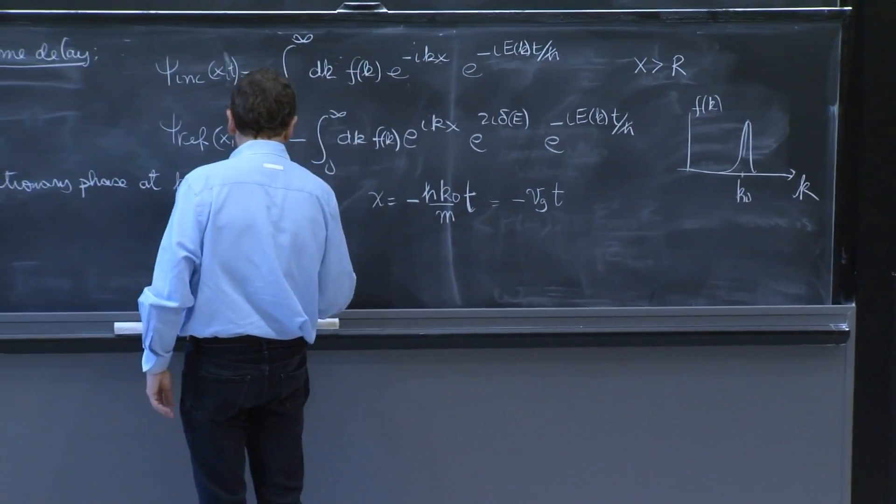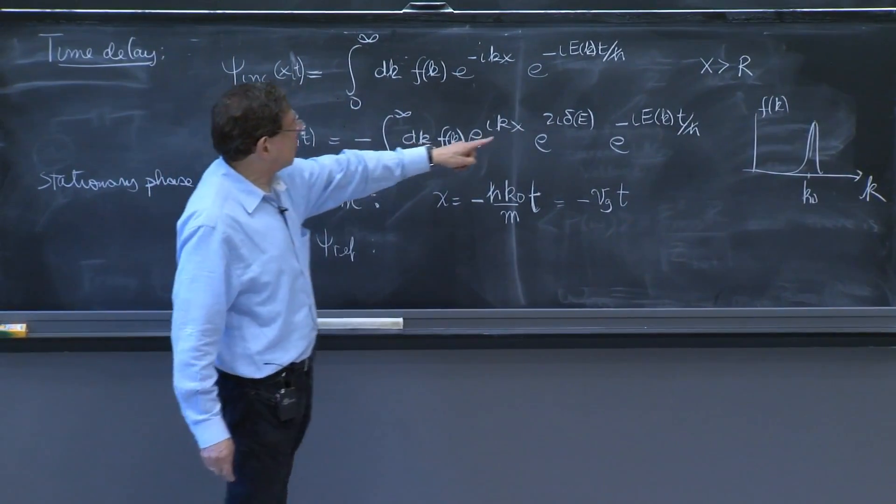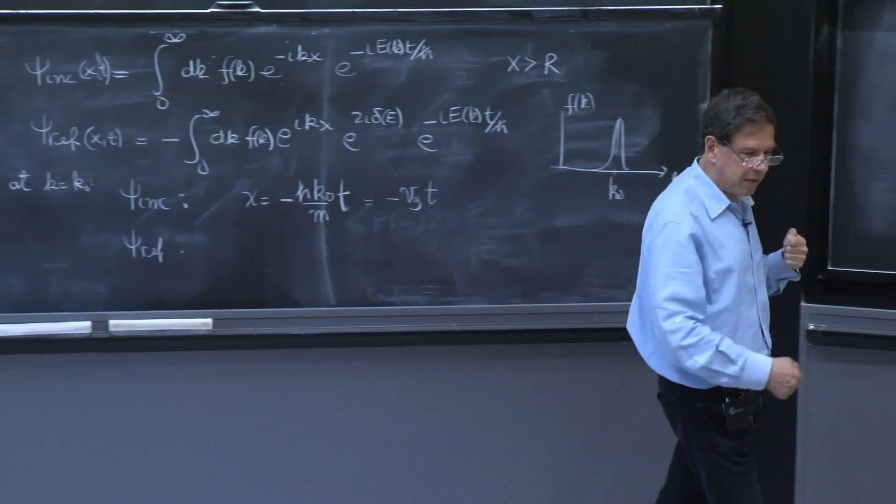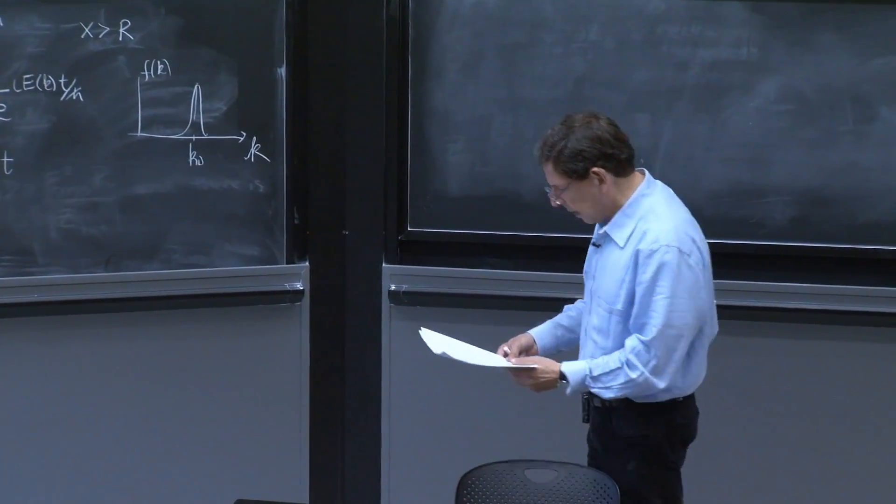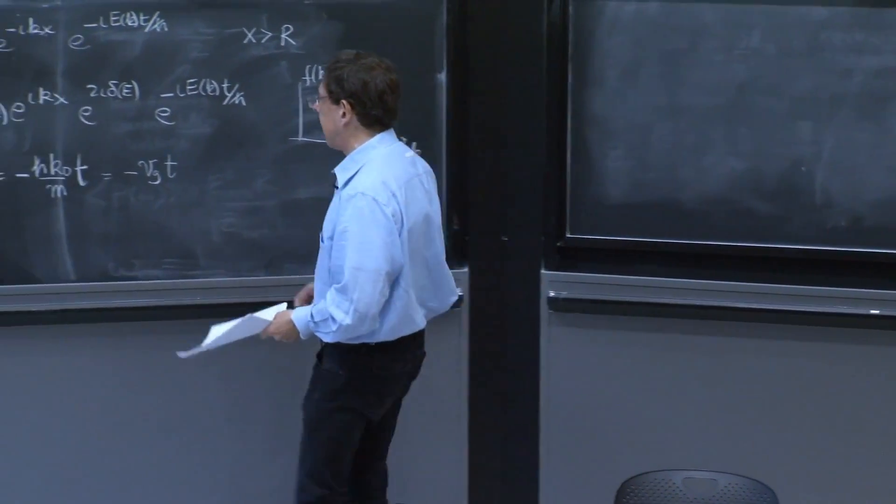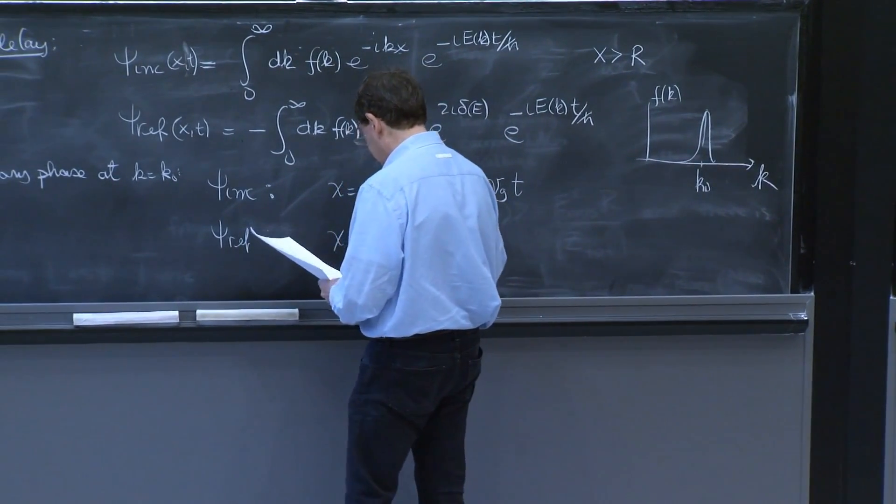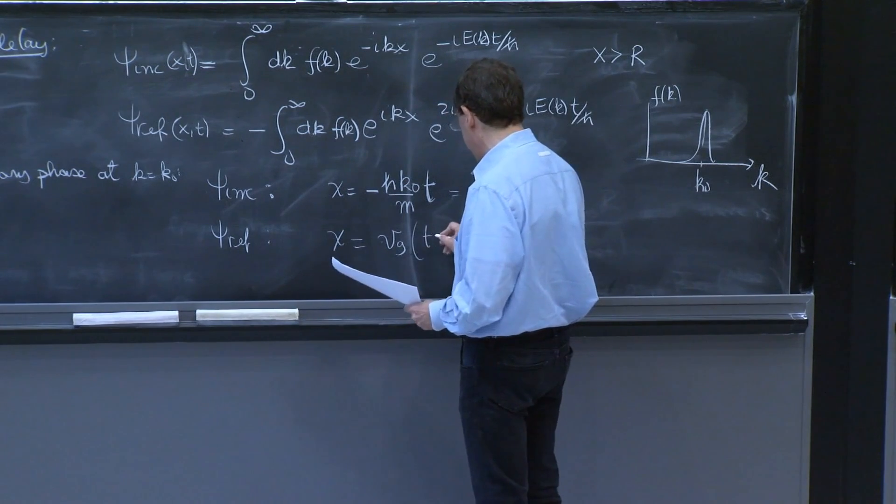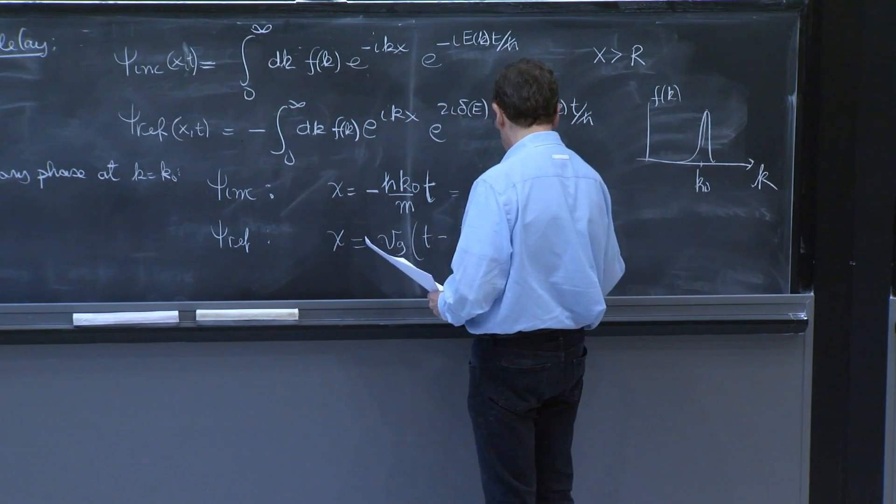For psi reflected, the derivative now has to take the derivative of delta with respect to e, and then the derivative of e with respect to the energy. And the answer in this case, and you've done this before, is v group times t minus 2h bar delta prime of e.